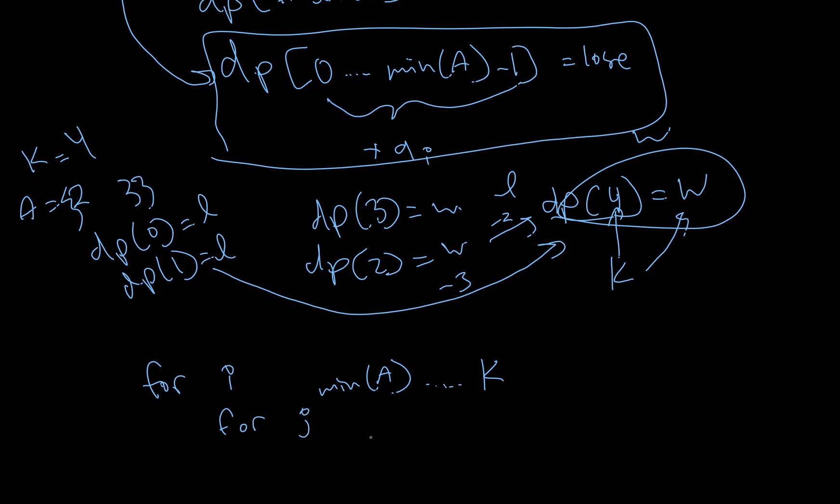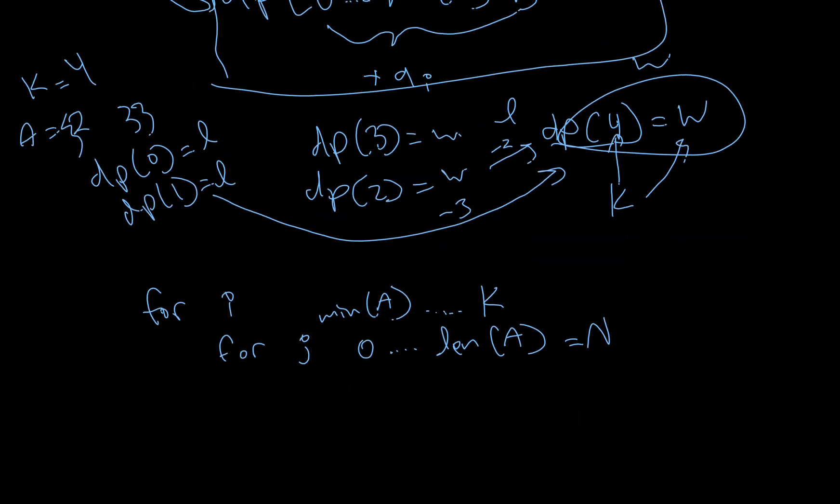and for J, which is from 0 to basically len of A, which is the same as N, you'd basically say, if this is, if I is my current number of stones, and I am subtracting this many stones, I'm using this value A_i, or it would be A_j in this case, can I win? So, all you would check, is you would just check if,